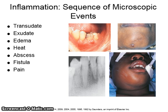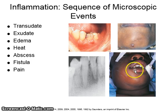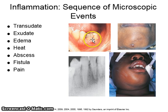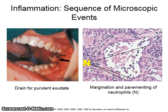In summary, the sequence of microscopic events in inflammation are transudate, followed by exudate which causes edema or swelling and heat, followed by abscess formation, which may lead to a fistula and pain. The pictures shown include different inflammatory results: excessive edema, radiographic lucency, and fistulous tracts. One picture shows a drain placed for draining purulent exudate, and another is a microscopic image of margination and pavementing of neutrophils.